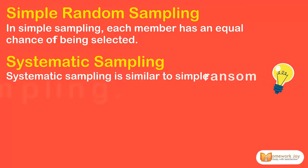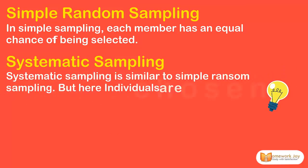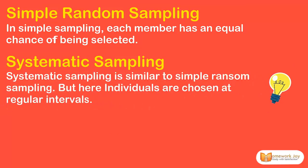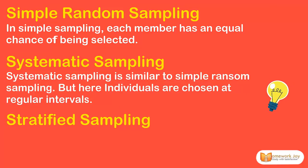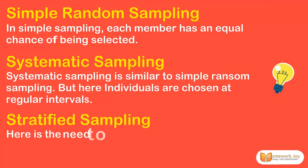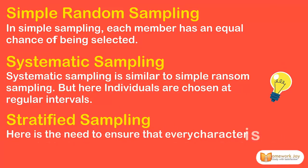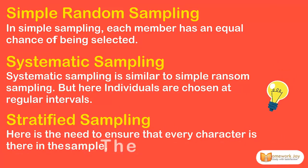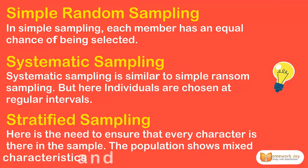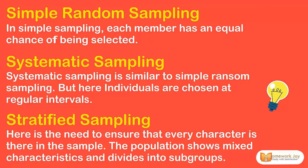Systematic Sampling is similar to Simple Random Sampling, but here individuals are chosen at regular intervals.